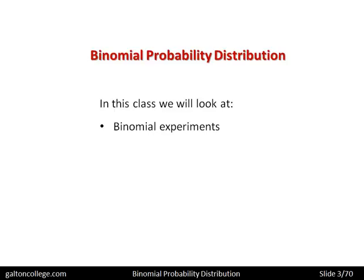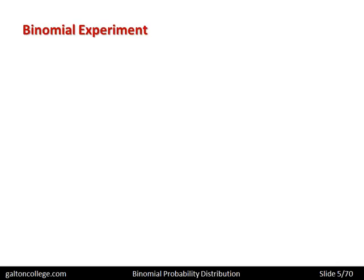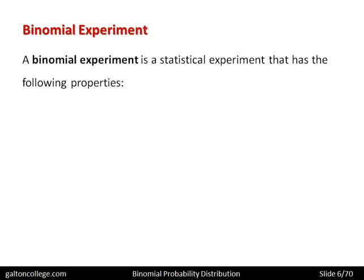The class will look at binomial experiments and some associated notation. I want to introduce notation — how it's written and the way it's written — and that may seem somewhat confusing as we go through it. Just make notes of it; it's actually quite clear the way it's written, but it may not be in a format with which you are familiar. Binomial experiments are very important to understand, as they can crop up in a lot of situations. So let's talk about the binomial experiment.